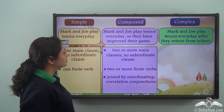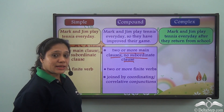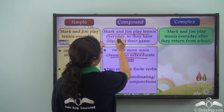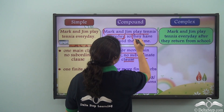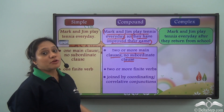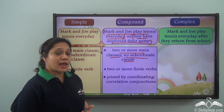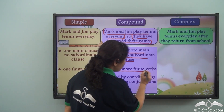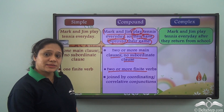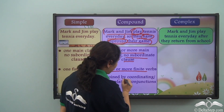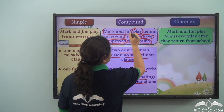A compound sentence has two or more main clauses or independent clauses and no subordinate clause. In our example, 'Mark and Jim play tennis every day' is one independent clause, and 'they have improved their game' is another independent clause. Both can stand on their own and make complete sense. There is no subordinate clause here, and it has two or more finite verbs — 'play' and 'have improved.' Both clauses are joined by a coordinating conjunction — 'so.'